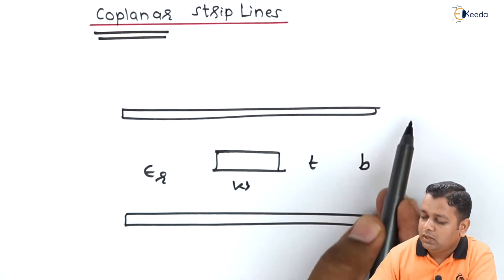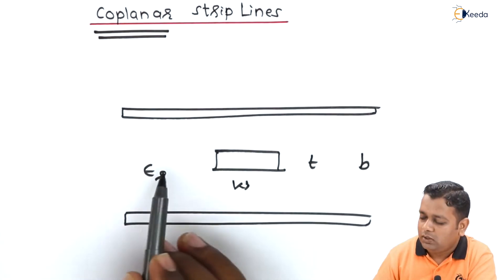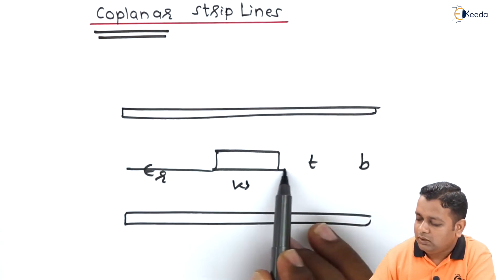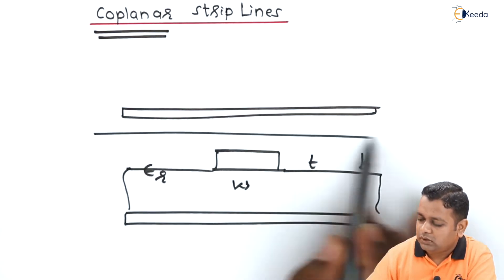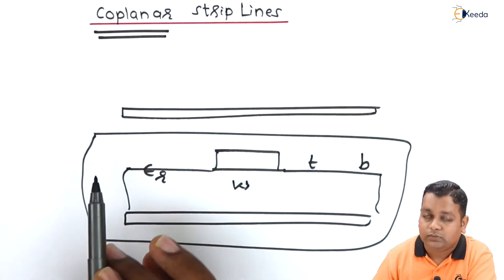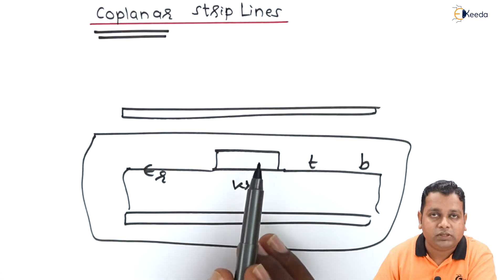Now when we get this top ground plane removed so that we have the dielectric up to this level only, this much of structure that I have outlined is basically the microstrip line.